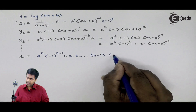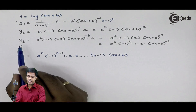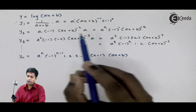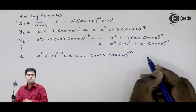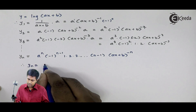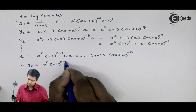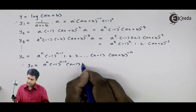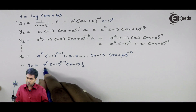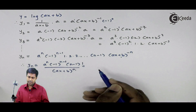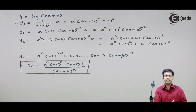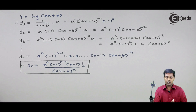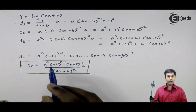And the last term is (ax plus b). Observing the power: in case of y3 the power was minus 3, in case of y2 the power was minus 2. Similarly, for yn we will get power as minus n. Therefore, yn will become a raised to n, (minus 1) raised to n minus 1, and this term is nothing but the factorial of n minus 1, divided by (ax plus b) raised to n. This is the formula for the nth derivative of log(ax plus b). This formula is very useful to find out the nth derivative of a logarithmic function, and we will see more examples where we will apply the formula.